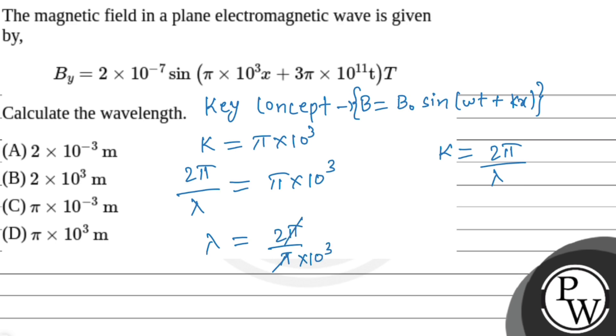Pi will be cancelled out. The value of lambda will come out as 2 into 10 to the power minus 3.